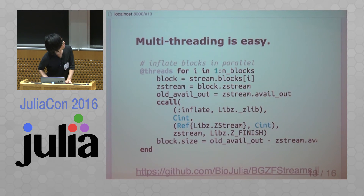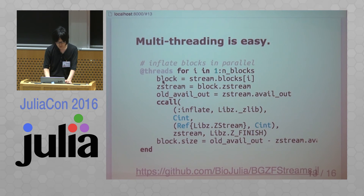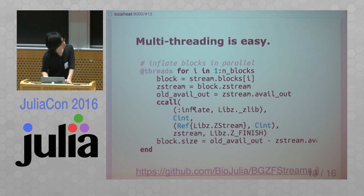Multi-threading is very easy in Julia — just add the @threads macro at the head of a for loop and the loop body runs in parallel across threads.